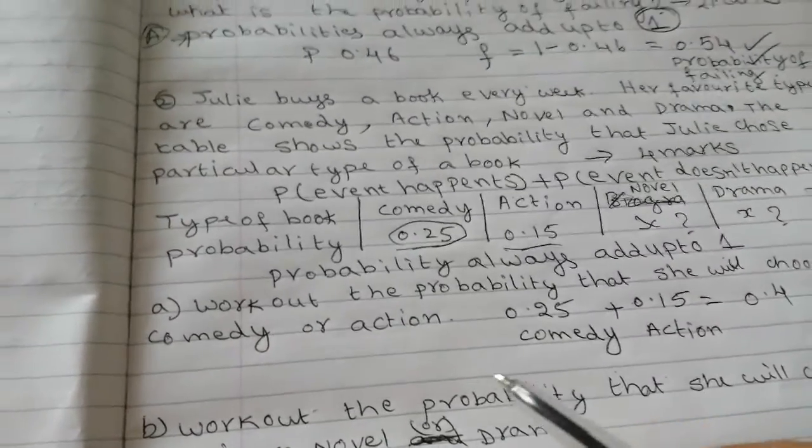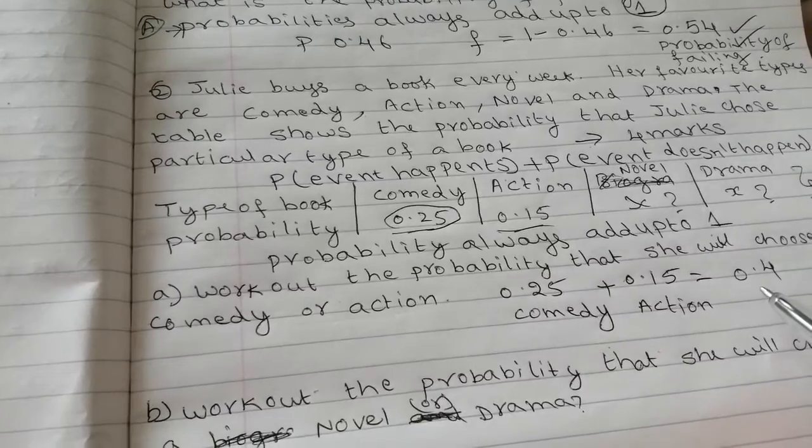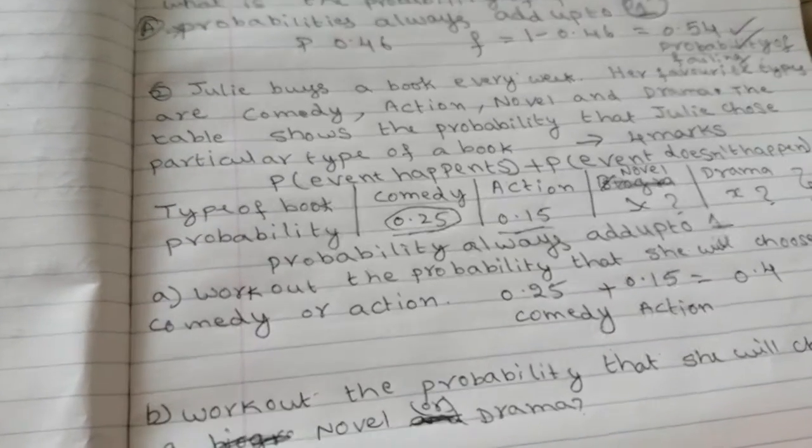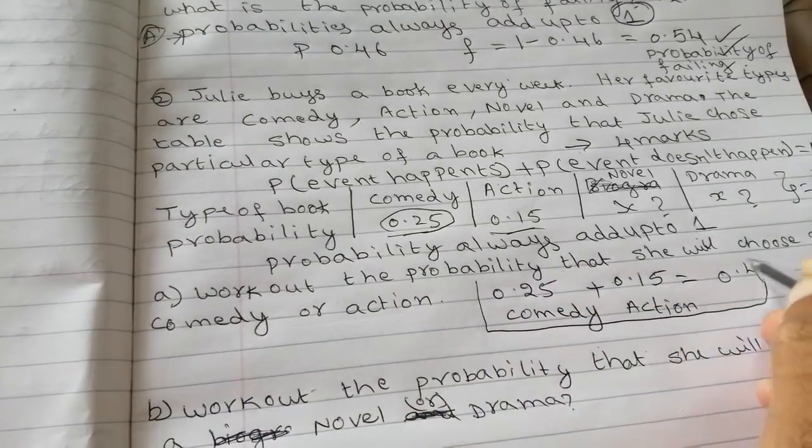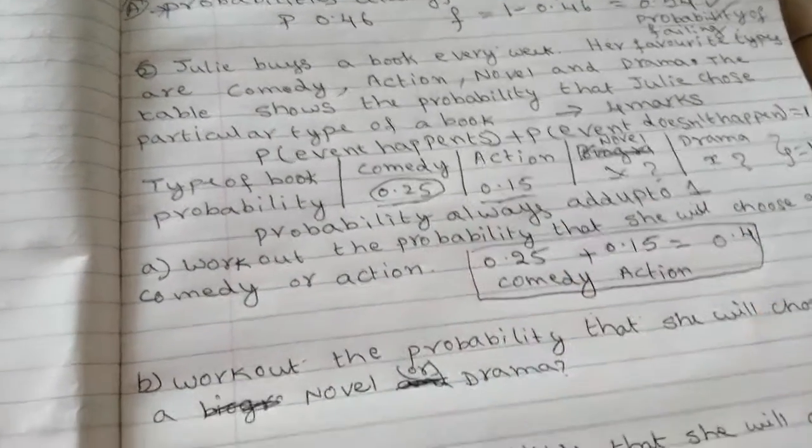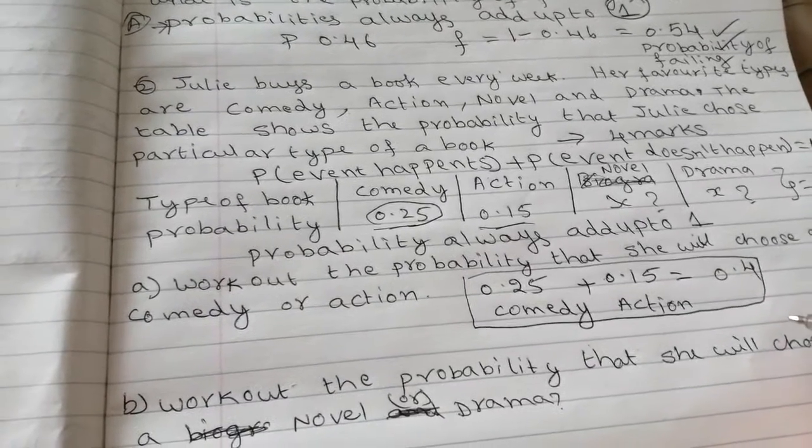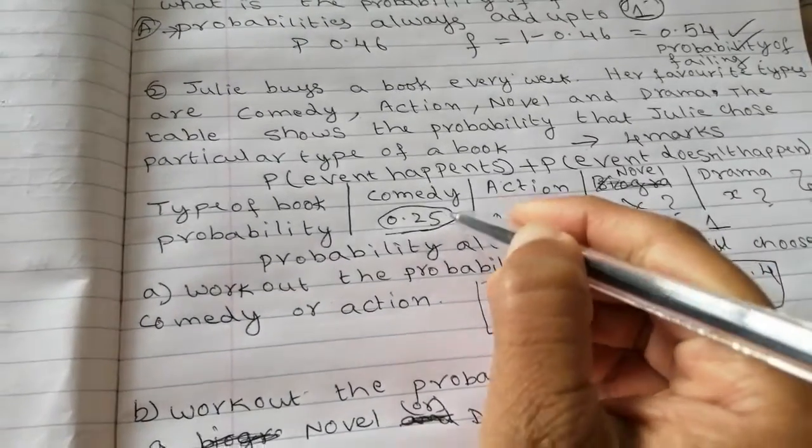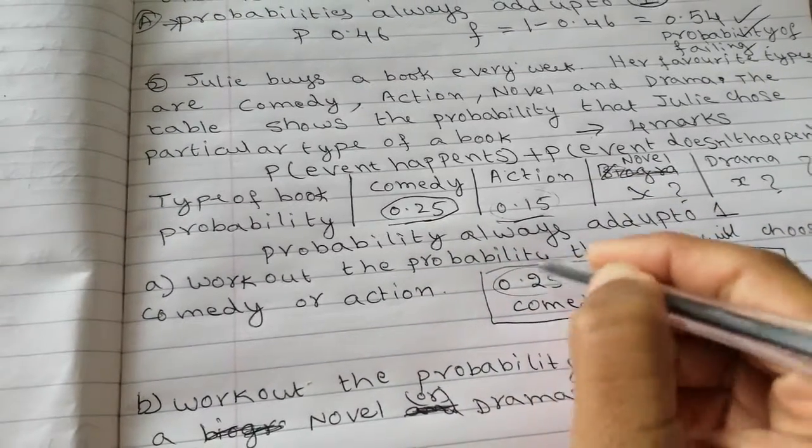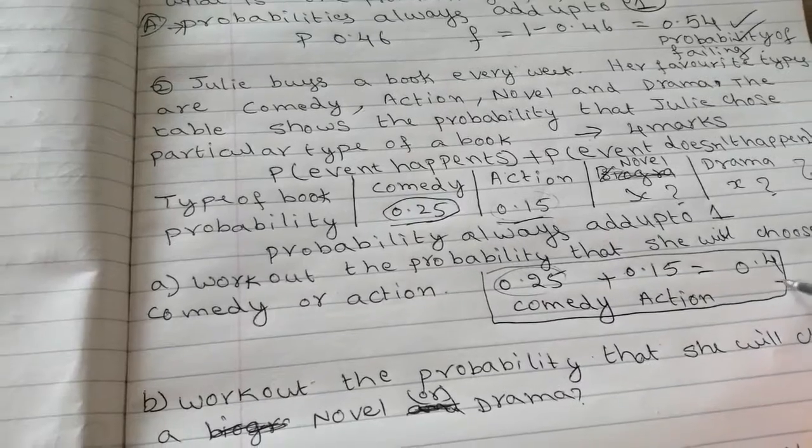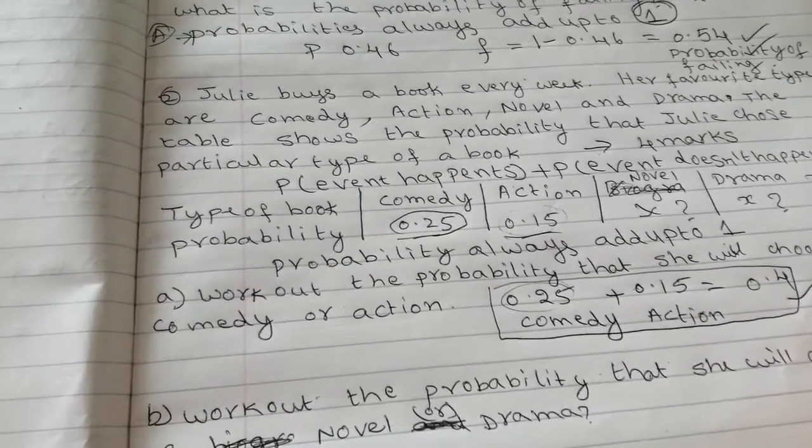Work out the probability that Julie chose a comedy or action, you need to answer like this. So take comedy and take action and add both of them and you will get that Julie chose a comedy or action book.